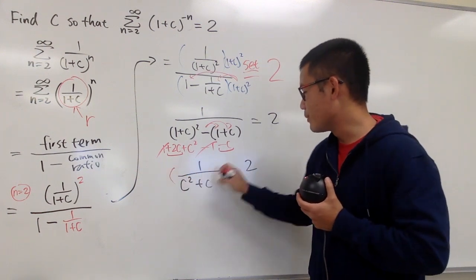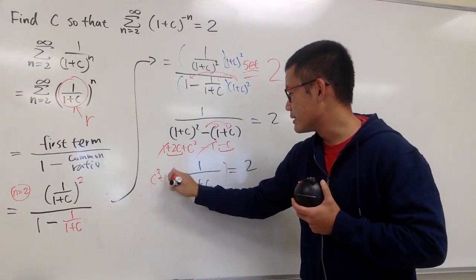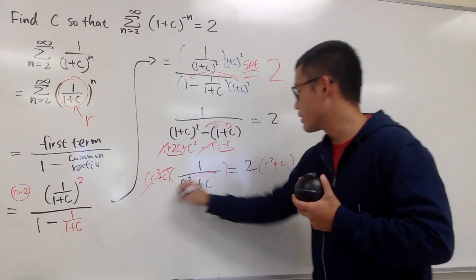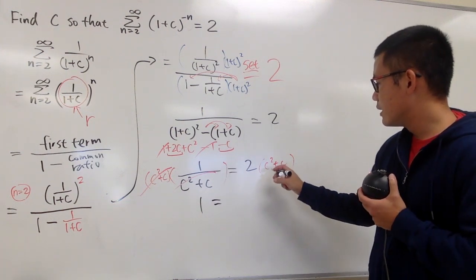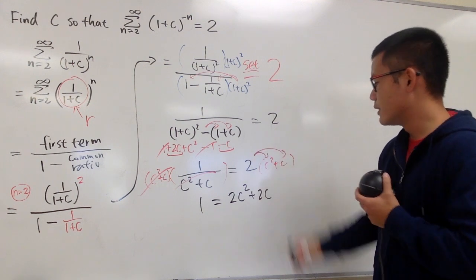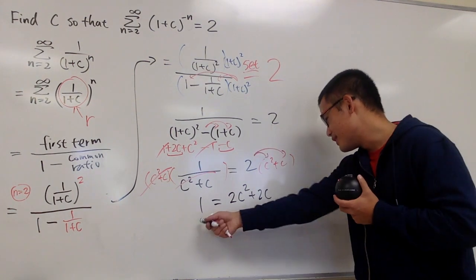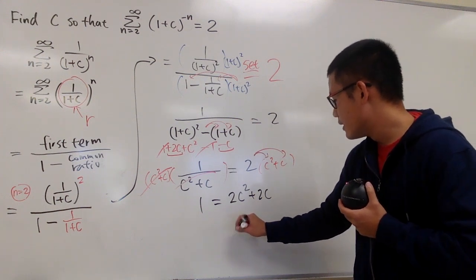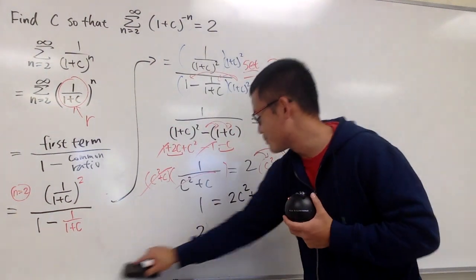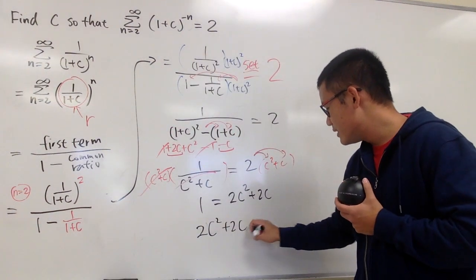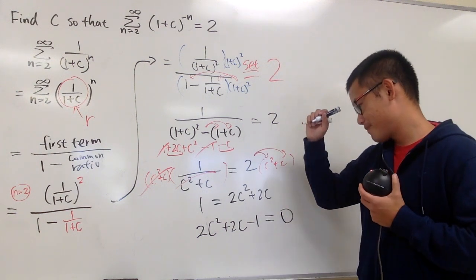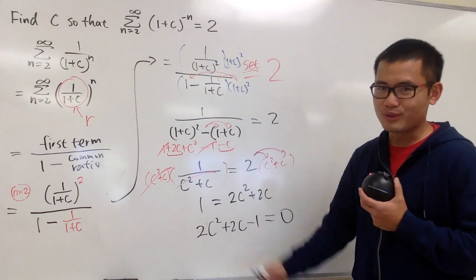We can multiply both sides by (c squared plus c). That cancels, and we have 1 equals 2c squared plus 2c after distributing. This is a quadratic equation — subtract 1 from both sides. So we have 2c squared plus 2c minus 1 equals 0. Is this factorable? I don't think so, so we use the quadratic formula.